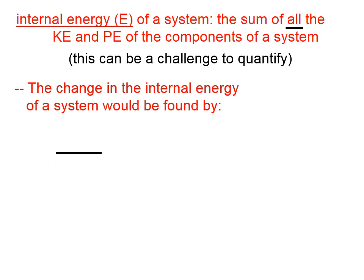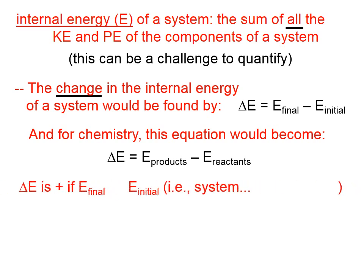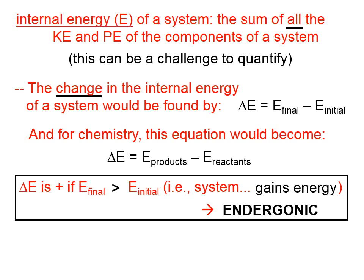The change in the internal energy of a system would be found by taking the final internal energy minus the initial internal energy. In chemistry, the final internal energy would be the internal energy of the products, and the initial internal energy would be that of the reactants. If the change in internal energy is positive, then the final internal energy is greater than the initial, and the system has gained energy. We would call that an endergonic process.